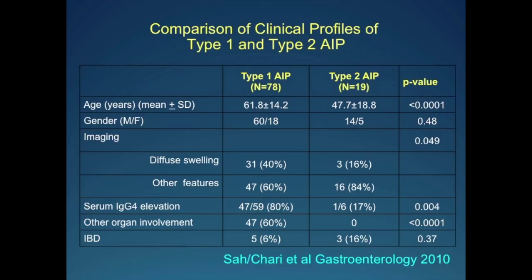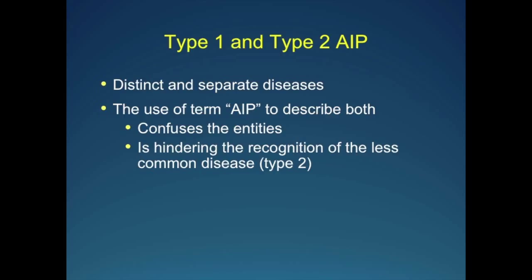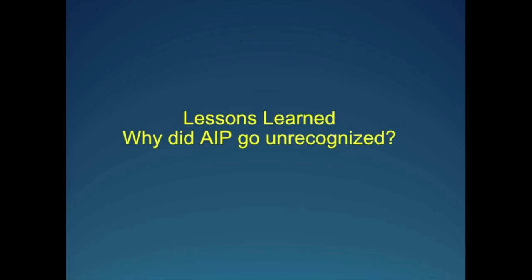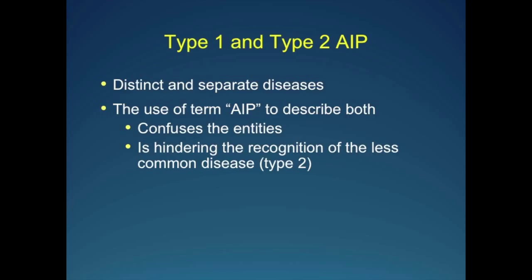So in my opinion, these are distinct and separate diseases. The term AIP has been used for both, and I think it's a disservice to the less common form, which is type 2 — it confuses the entity. When I talk to the general gastroenterologist, he thinks AIP is type 1, and it's hindering the recognition of the less common disease. The Japanese pleaded with me to give it another name, but let's call it type 2 — remember, it's a completely different disease compared to type 1.